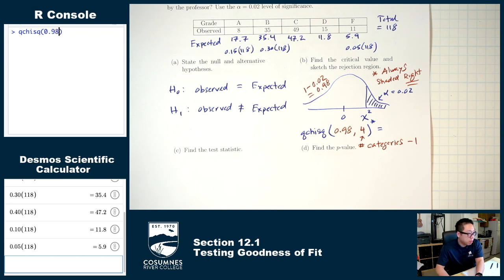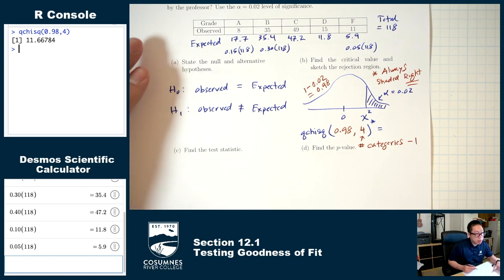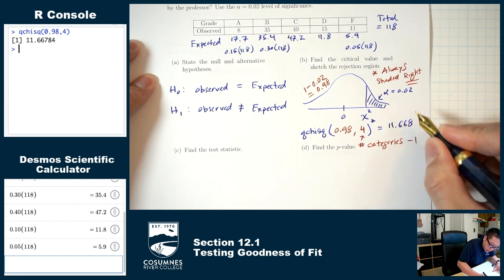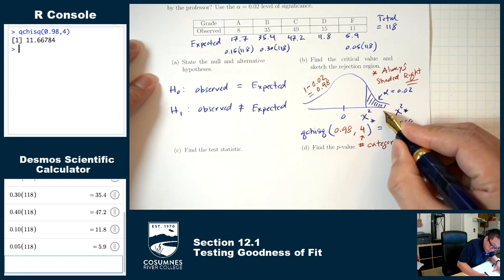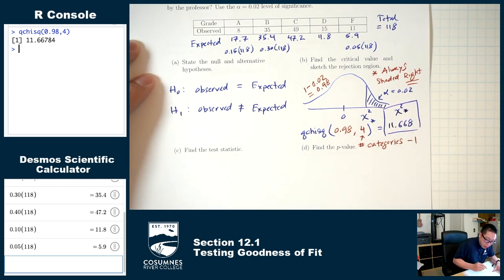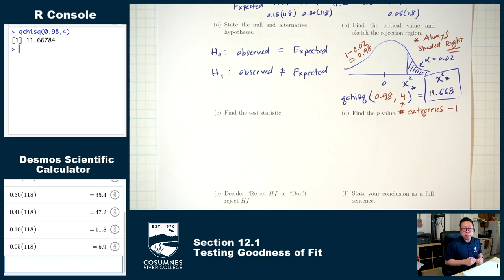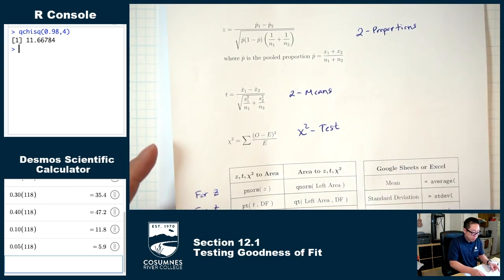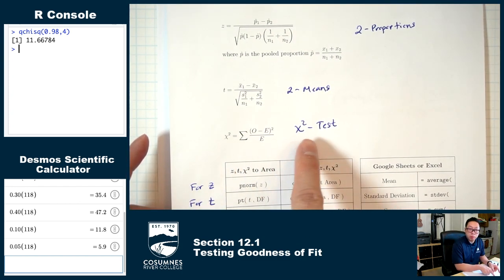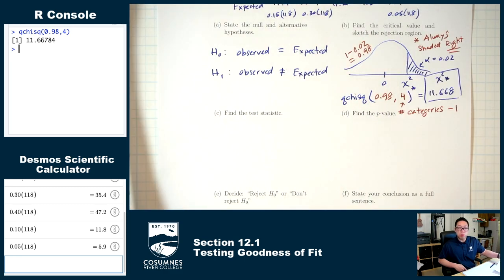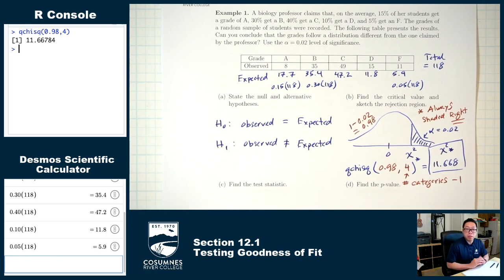In R: qchisq(0.98, 4). The result is 11.668. That's our chi-square*. Part C: find the test statistic. We'll use the chi-square formula, so I need to switch over to Google Sheets and enter the data.